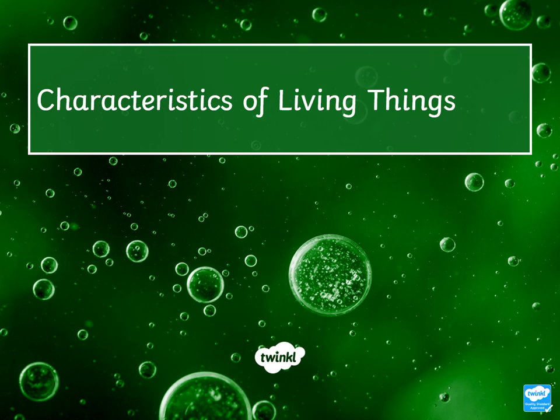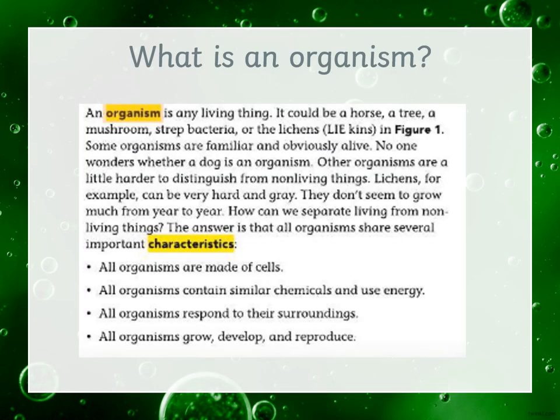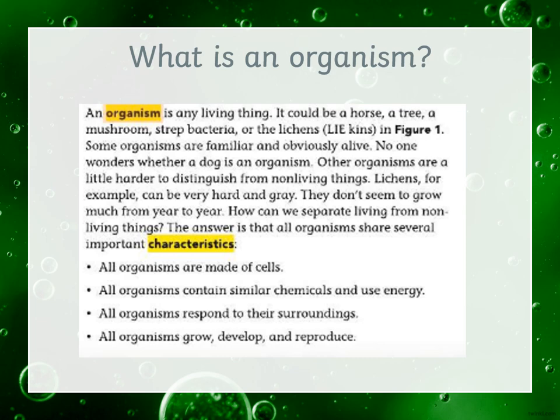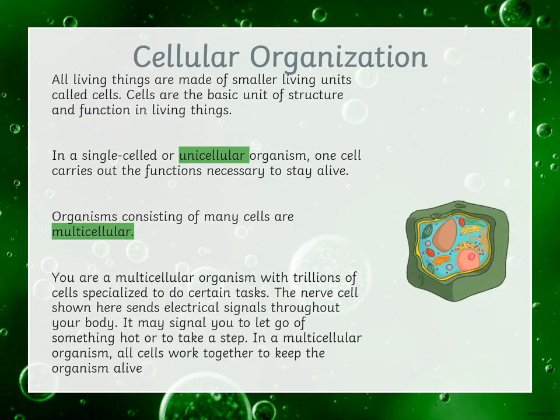We're going to talk about living things. We are going to start by understanding what an organism is as a term. And then we have four to five characteristics that we will be taking in detail. First, we're going to start with cellular organization, and we're going to talk about unicellular and multicellular cells, what is a cell, and how all organisms are made of cells.